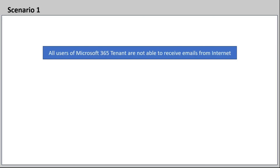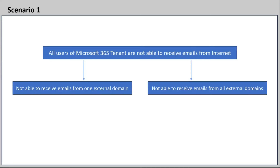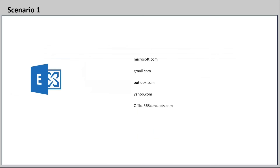The first scenario we are going to discuss is: all the users of a Microsoft 365 tenant are not able to receive emails from the internet or from external domains. Before we start troubleshooting any issue, we should always isolate the issue first. We need to isolate whether users are not able to receive emails from a particular external domain or from all external domains, because the troubleshooting approach will change based on this isolation.